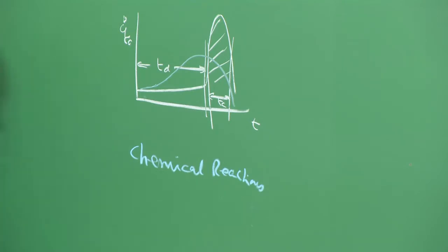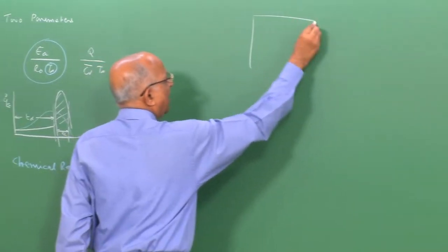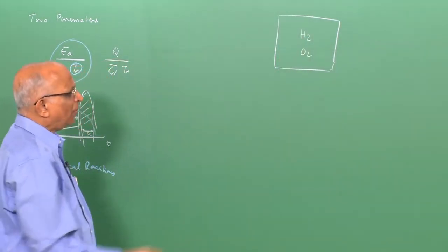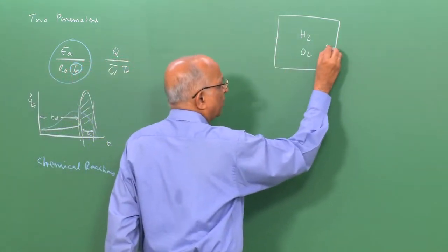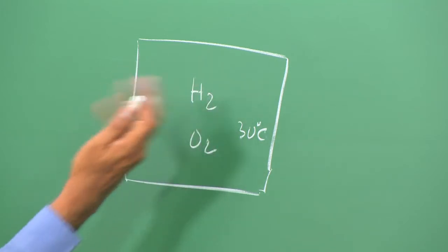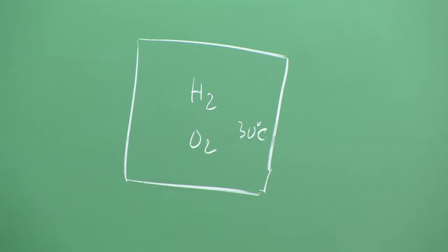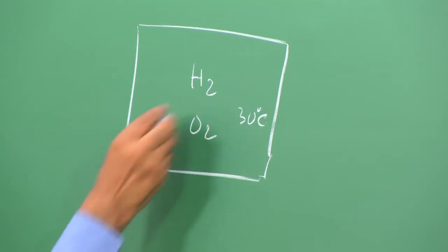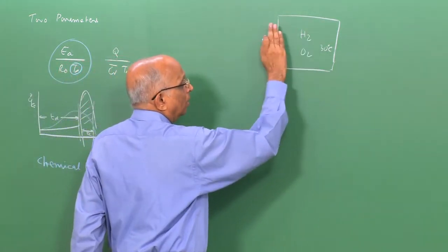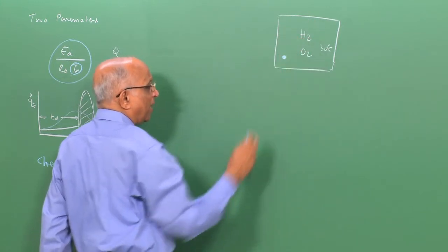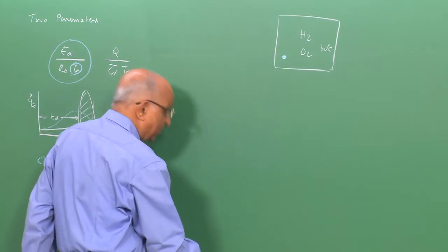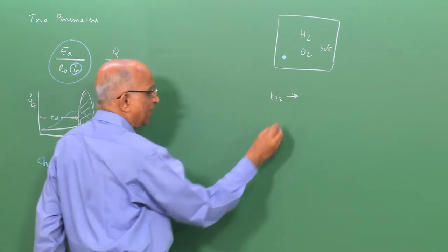Let us go back to our starting point. We have a container with hydrogen gas and oxygen gas mixed together. Hydrogen and oxygen can be in the container for years at room temperature — say 30°C, one atmosphere — and nothing will happen. But if we want to start a reaction, we must put in an electrical spark to deposit some energy at a point, otherwise we remain within the lumped parameter approach of uniform temperature and uniform concentration.